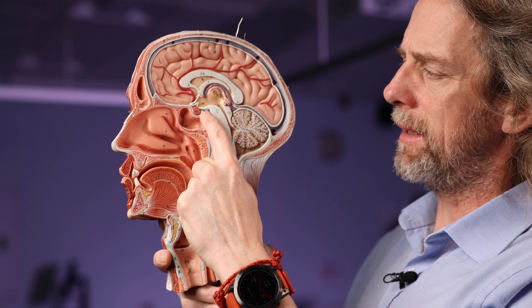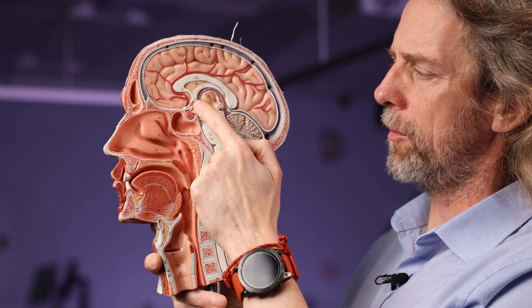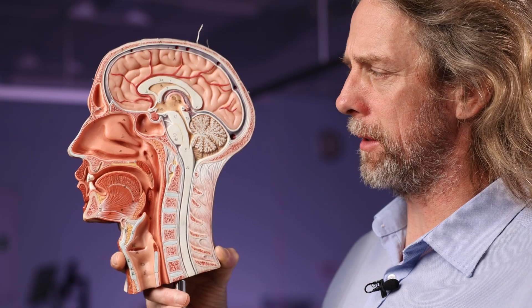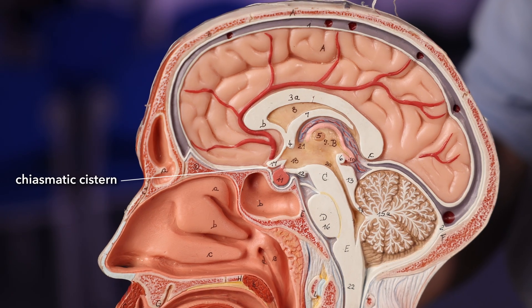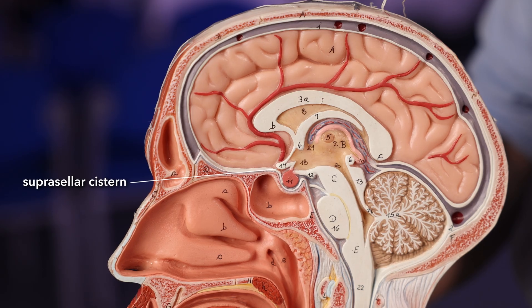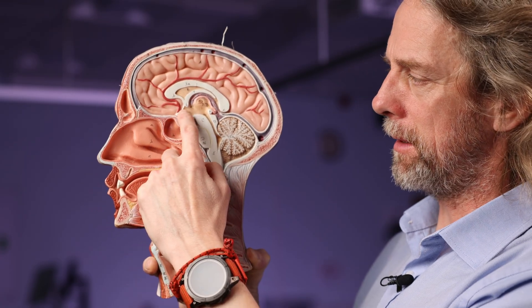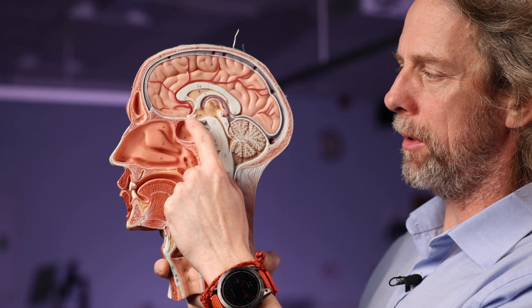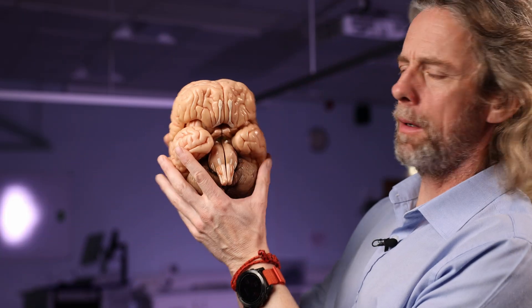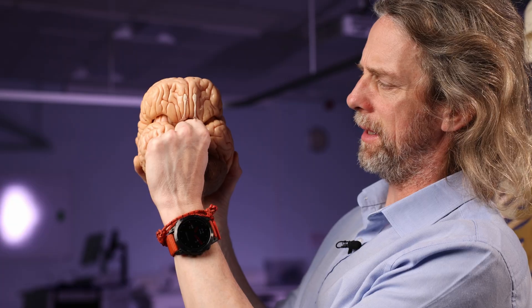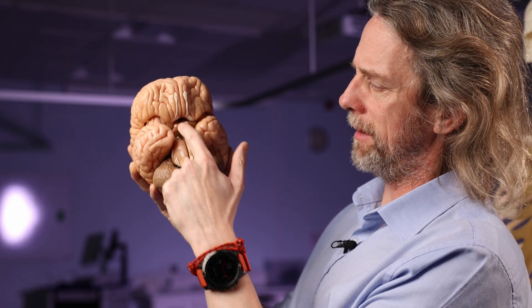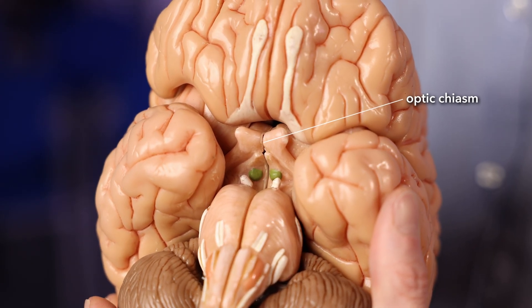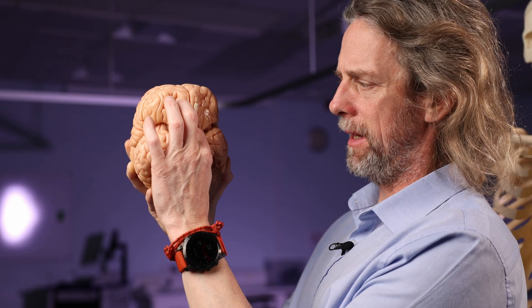The pituitary gland is in the sella turcica. Here is the optic chiasm — there's the thalamus. The optic chiasm is in a subarachnoid cistern called the chiasmatic cistern, or the suprasellar cistern, superior to the sella turcica. There's a space between the hypothalamus and the bone in there. You can see the space more clearly — there's the optic chiasm, the pituitary gland sitting there — and you can see there's a space there inferior to the lobe containing the optic chiasm. That is the chiasmatic cistern.